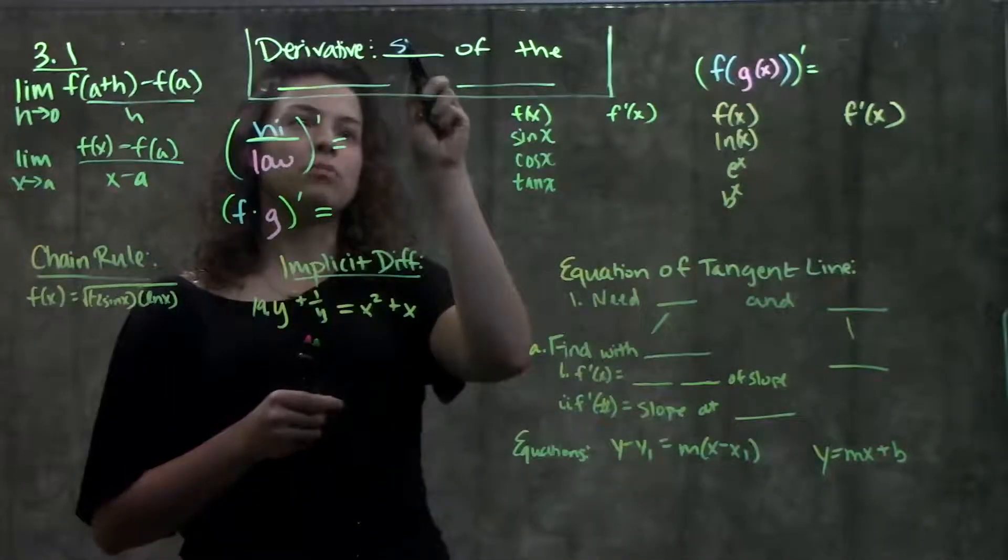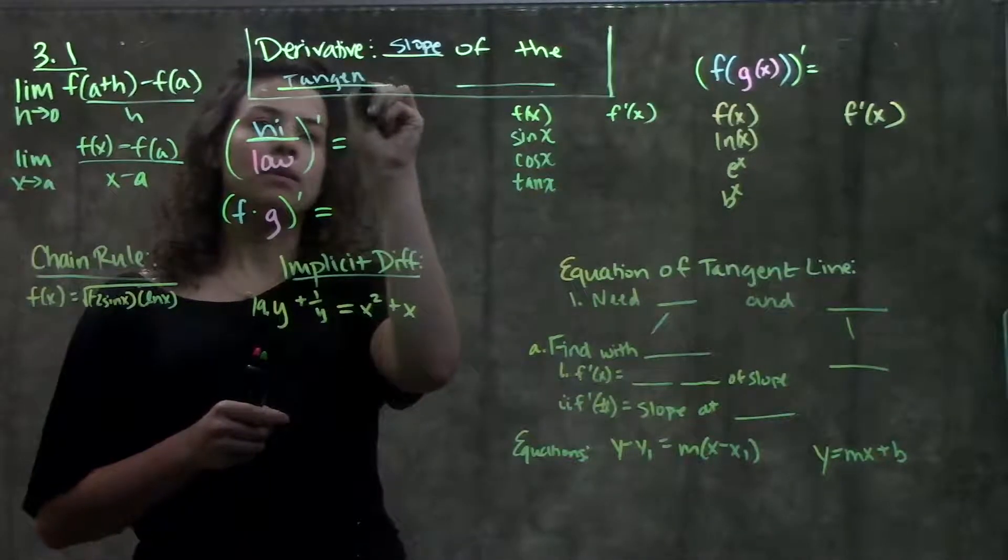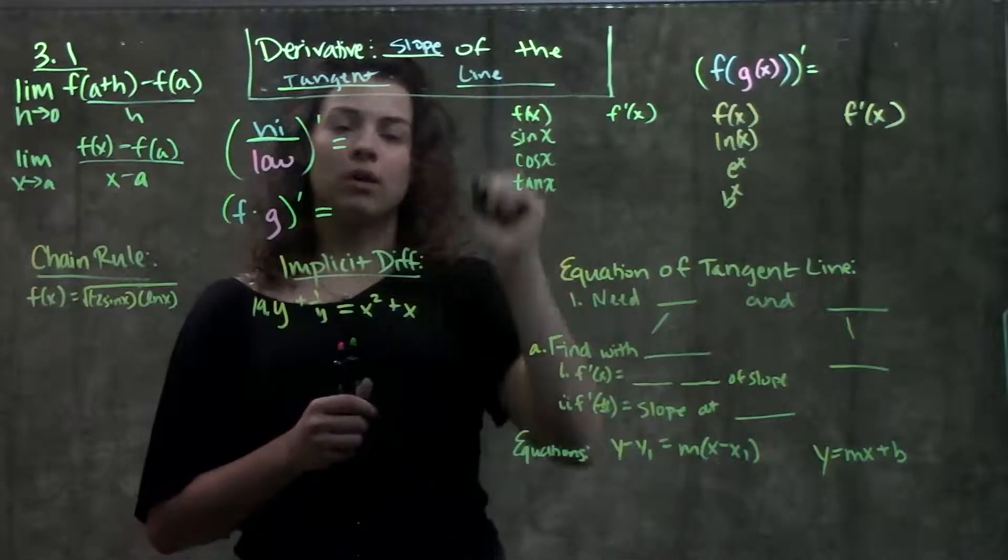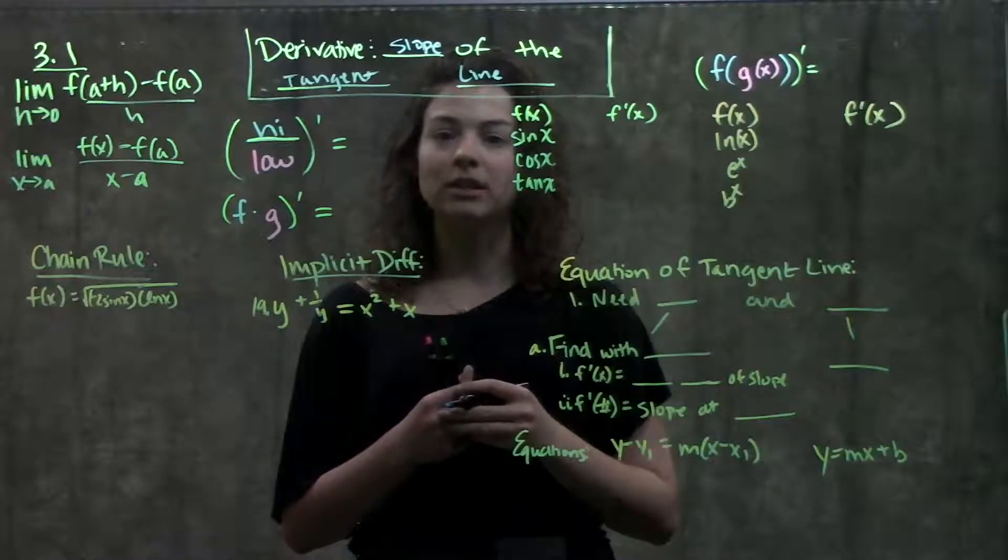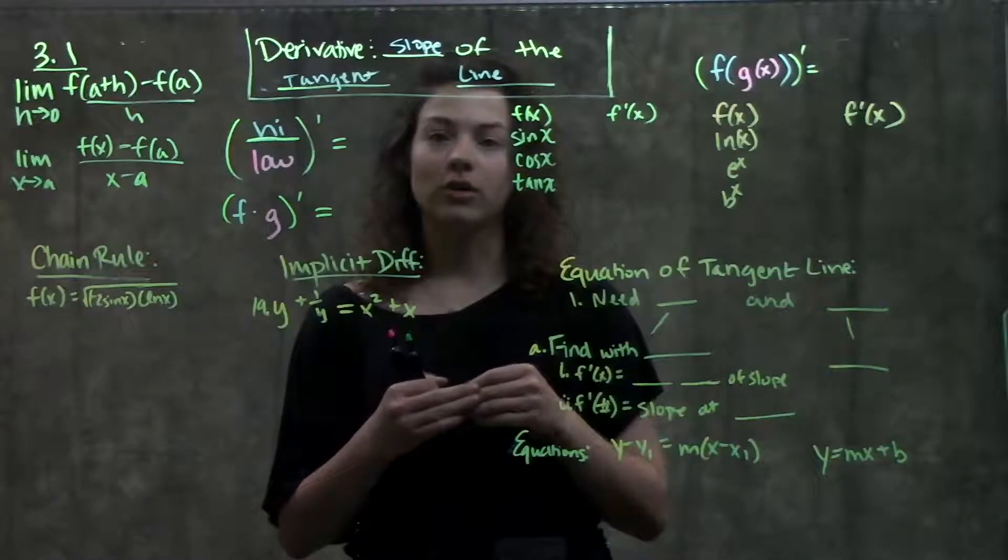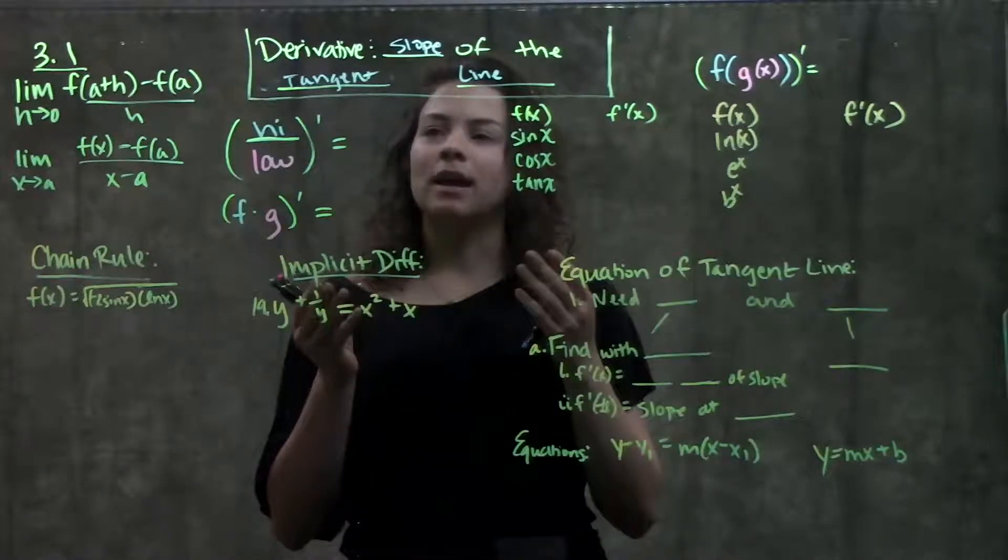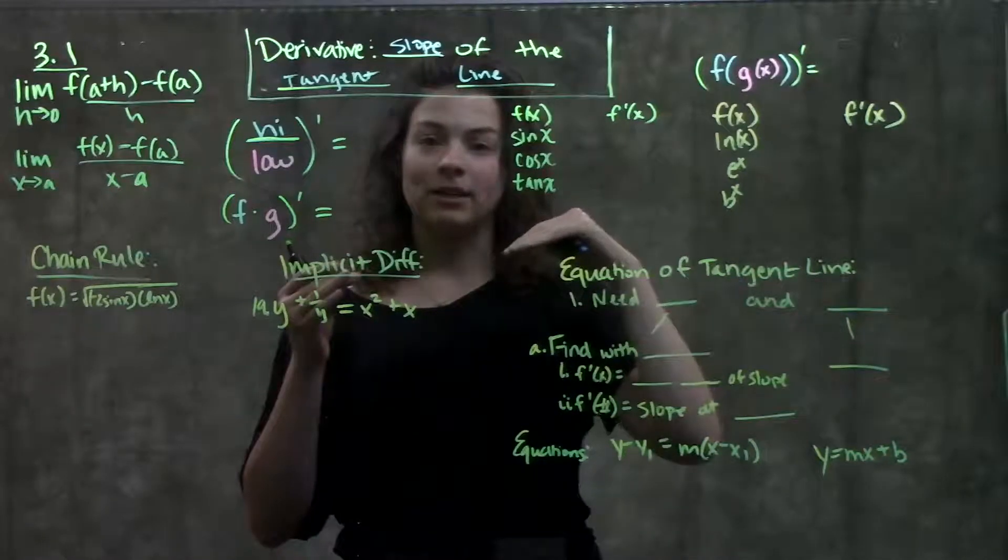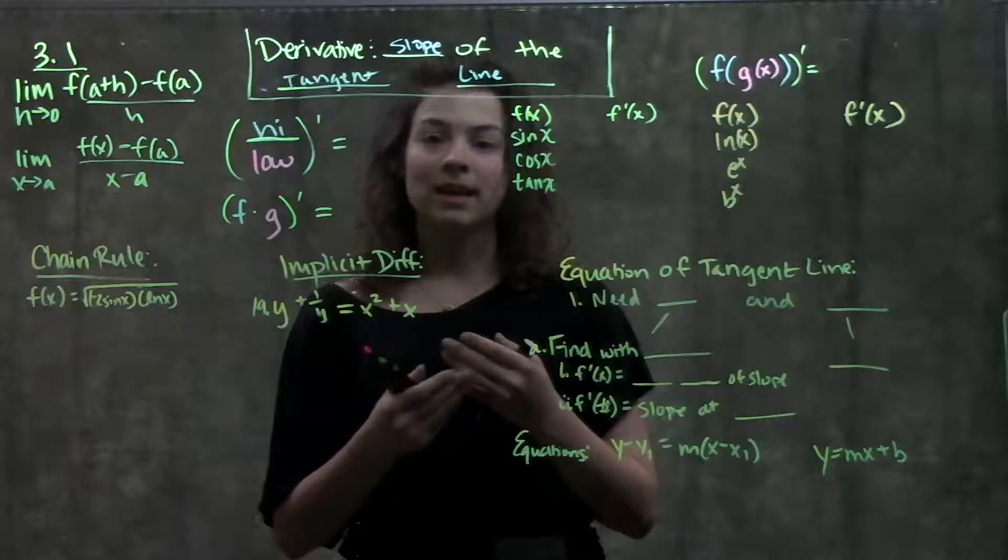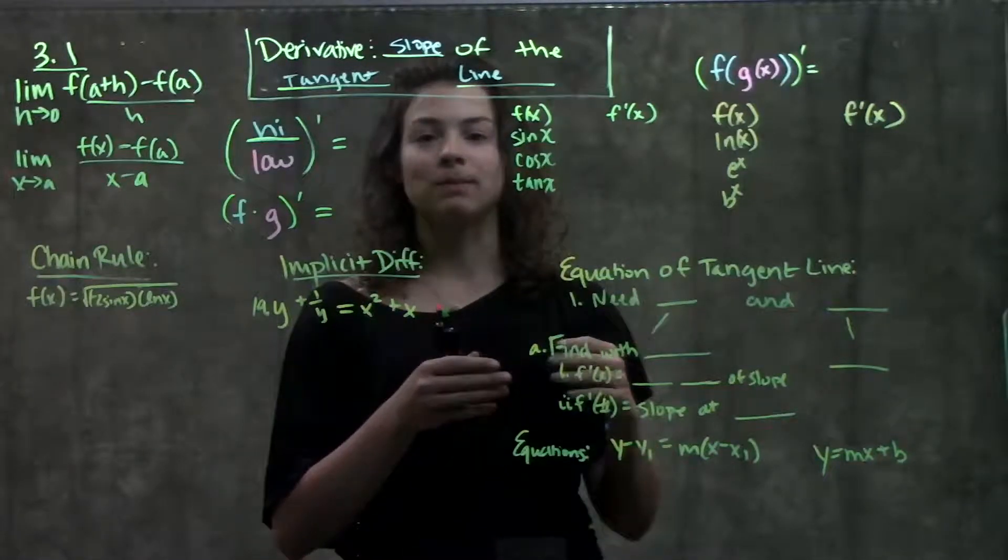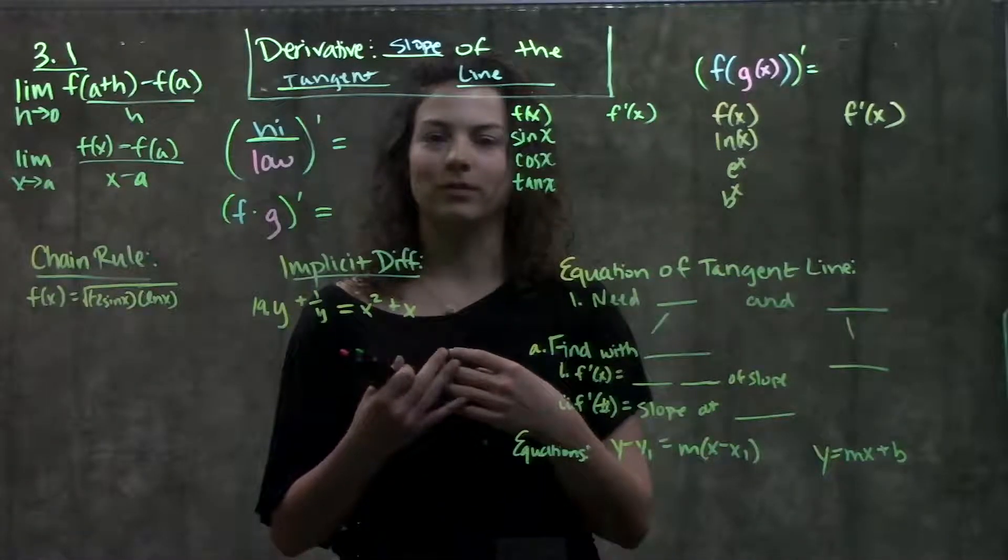The derivative is the slope of the tangent line. If you remember, in section 2.1, we had to estimate the instantaneous rate of change of a function by plugging in points closer and closer to our point of interest. Here's the math way of how to do that. The derivative is the slope of that tangent line. When we solve for the derivative and plug in a point, we're getting the instantaneous rate of change at that specific point without having to plug in all those points closer and closer to our point of interest.